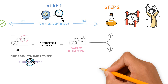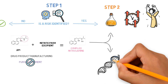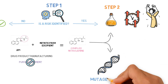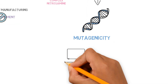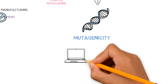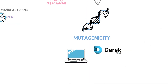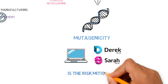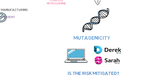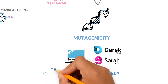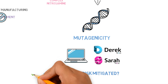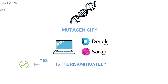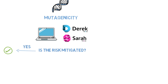Hence, the other option is confirming if the nitrosamine is actually mutagenic. In silico systems are available to predict the mutagenicity, and the structure-activity relationship of nitrosamines is constantly being researched and refined. However, there may be cases when there is not enough information for the risk to be mitigated this way.